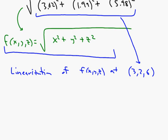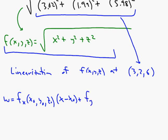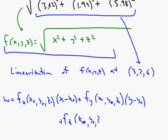We need a new output variable, which we'll call w. The linearization is: w equals f sub x of x₀ comma y₀ comma z₀ times x minus x₀, plus f sub y of x₀ comma y₀ comma z₀ times y minus y₀, plus the analogous z term times z minus z₀. We just added this extra piece to go up that dimension.